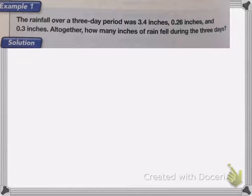So if we have this problem, the rainfall over a three-day period was 3.4 inches, 0.26 inches, and 0.3 inches. Altogether, how many inches of rain fell during the three days?